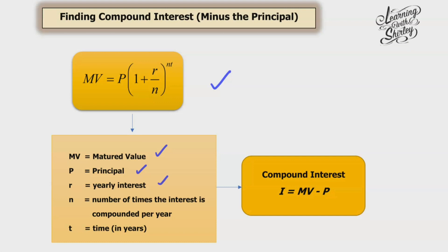And then r is the yearly interest in percentage. And n is the number of times the interest is compounded per year. And t is time in years. So to find compound interest, we have to use the formula I equals to the matured value minus the principle.